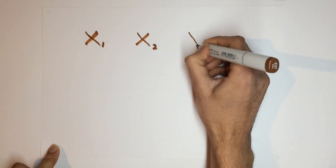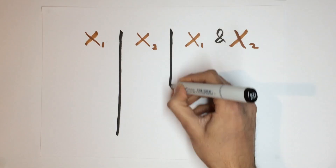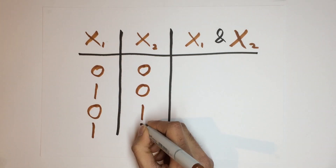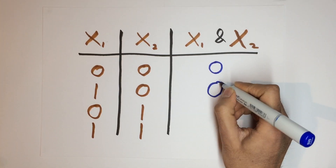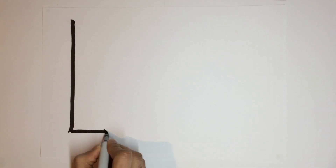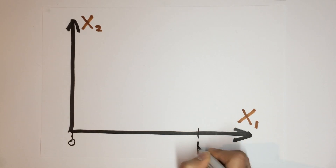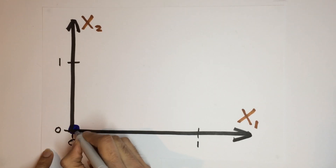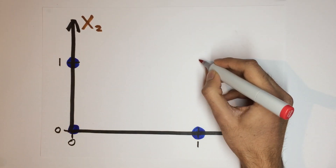So let's consider the good old logical AND function. This function takes in two binary inputs and outputs one binary output, being true if both inputs are true, or outputs false in all other cases. Representing true as 1 and false as 0, we can draw up a truth table that shows the function's outputs for each possible input combination.